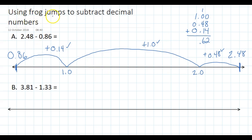In this video I'm going to talk about using frog jumps to subtract decimal numbers. I have an example already done for you: 2.48 take away 0.86, and you can see that I've got a number line here.